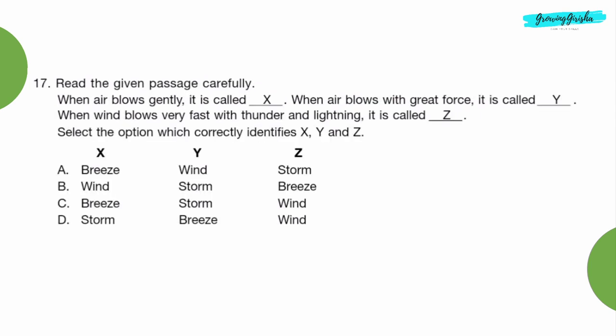Question 17: Read the given passage carefully. When air blows gently it is called X. When air blows with great force it is called Y. When wind blows very fast with thunder and lightning it is called Z. Select the option which correctly identifies X, Y, and Z. Option A.